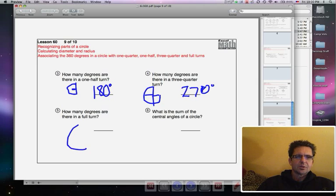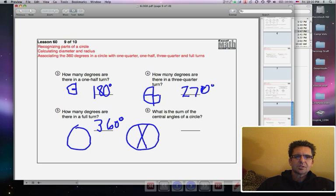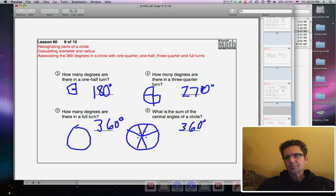How many degrees are there in a full turn? That's all the way around the circle. 360 degrees, kind of like when you're flipping your skateboard around and you do a 360, you're doing a full turn. And what is the sum of the central angles of a circle? If this is a circle, all the angles in the middle, no matter how you slice this and make any angles you want to, these angles are all going to add up to 360, no matter what. So the answer is 360 degrees. Alrighty, that's it for Lesson 60.